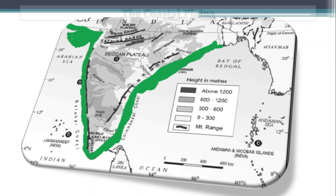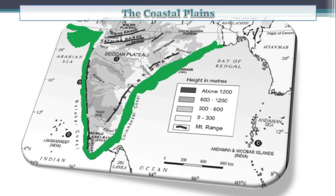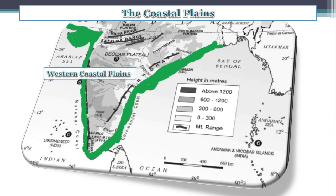Now, look at the map. The coastal plain stretches from Rann of Kutch to Kanyakumari and Kanyakumari to West Bengal. Its total length is about 6,100 km, excluding islands. The coastal plain is divided into two parts: Western Coastal Plain and Eastern Coastal Plain.